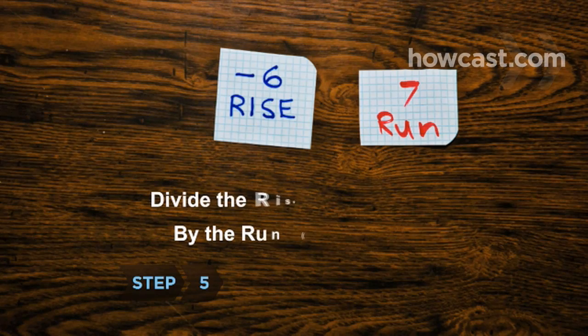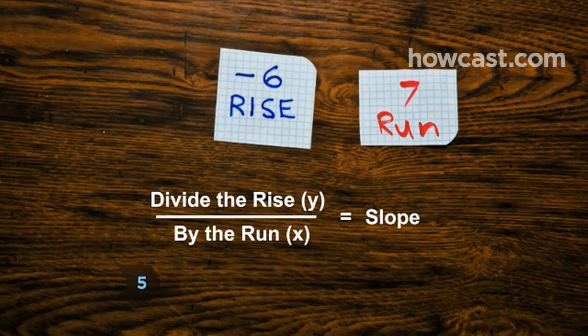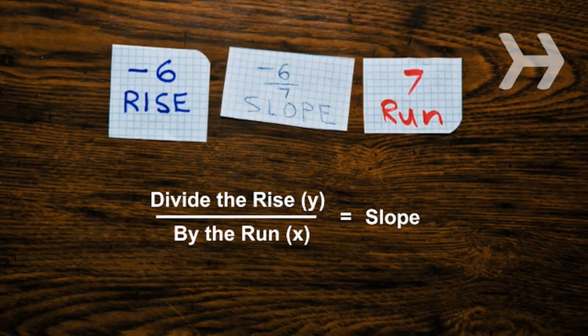Step 5. Divide the rise in the Y-axis by the run in the X-axis to find the slope of your line, an exact measurement of just how steep it is.